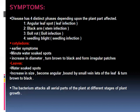When cotyledons are targeted, these are early symptoms that can appear at any stage. Minute water-soaked spots are found on the surface of the cotyledons, which increase in diameter and turn brown to black color, forming irregular patches on the surface of the cotyledons.